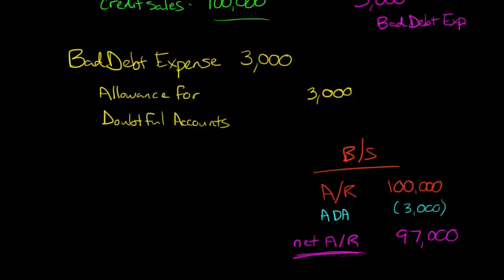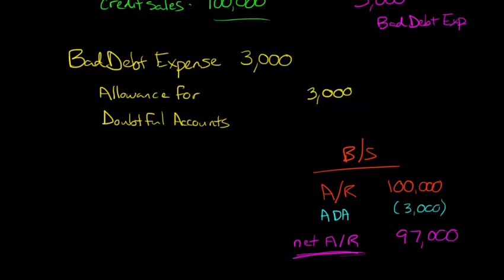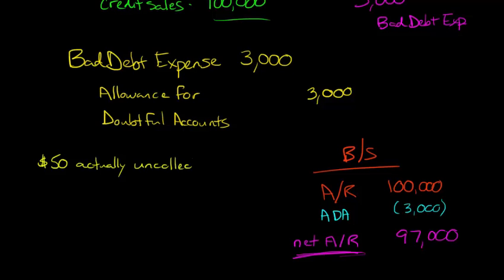Now you might wonder: we estimate the amount of sales that won't be collected, but what do we do when someone in fact does not pay their bill? Because this is just an allowance — this is our estimate. What's the journal entry when someone actually doesn't pay? So let's say $50 is actually uncollectible. One of your customers owes you $50 and they go bankrupt. Now you need to make the journal entry.